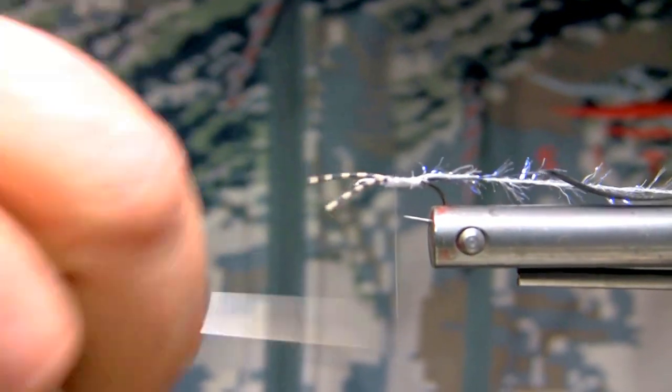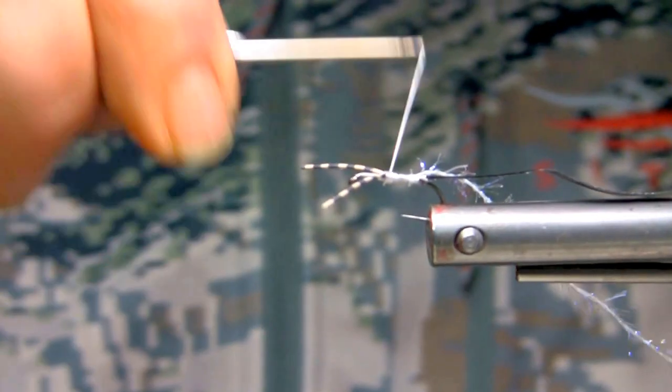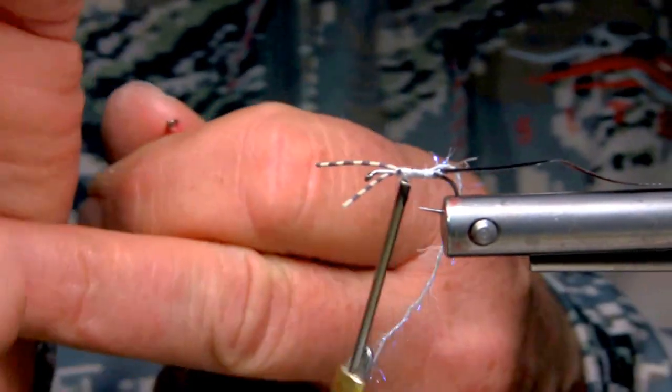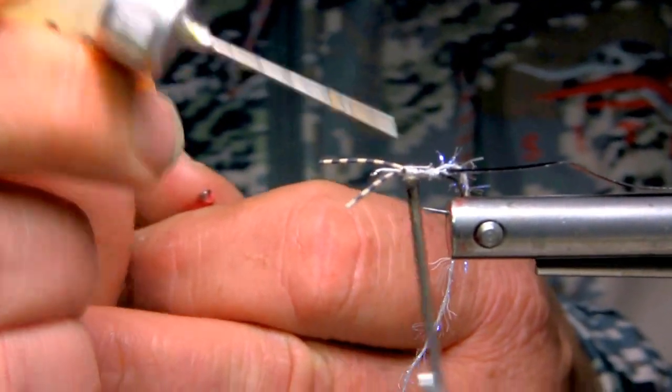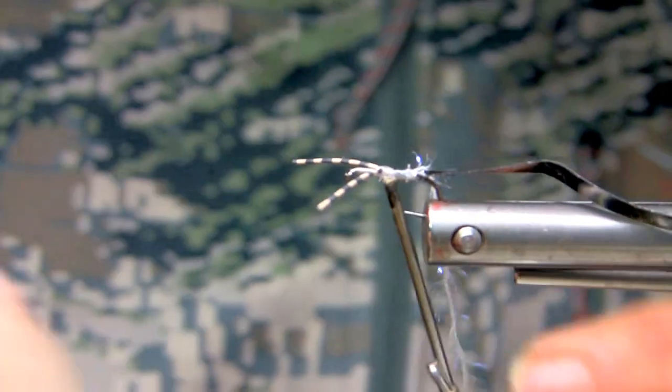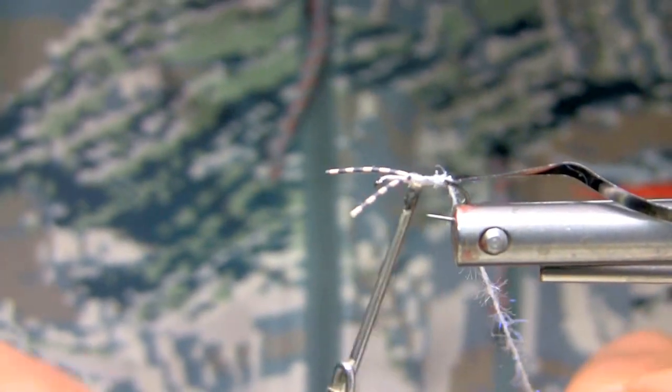I'll just bring that up behind the rubber legs. It's slightly short. Lay in a bit of head cement, this will help penetrate deep into the material. And then I'll just run touching turns.